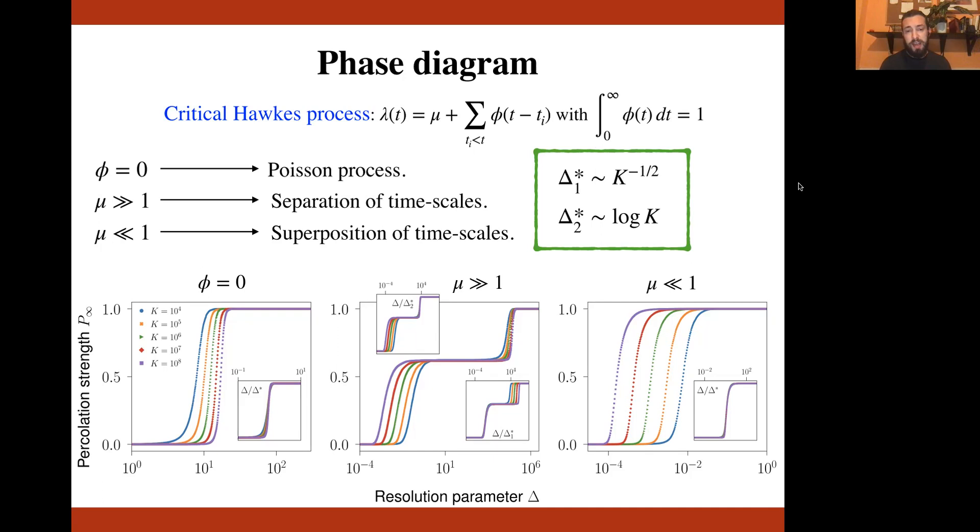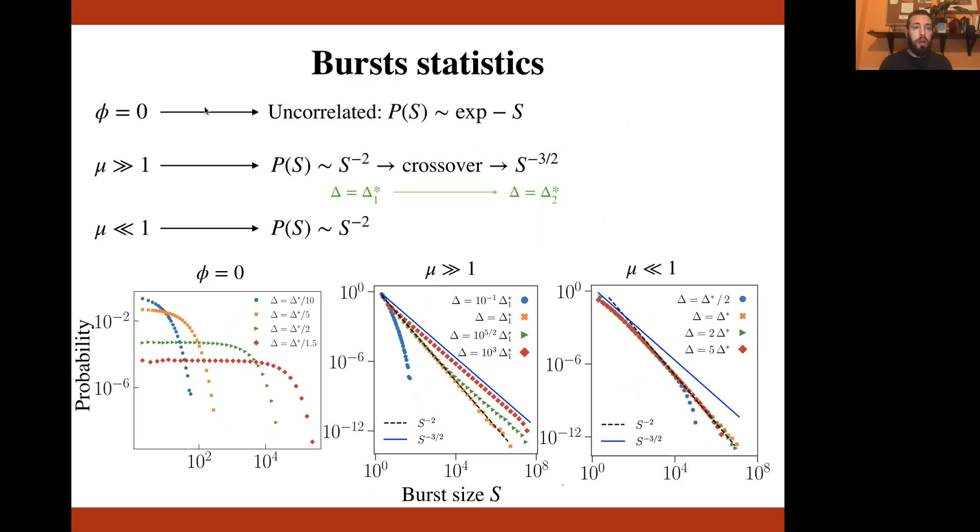At this point, we can fix a system size and study the burst statistics by varying the resolution. Again, in the case of the Poisson process, the process is fully uncorrelated. And as one expects, we find that the probability distribution of the burst size is exponential with a typical scale that grows as one approaches the transition point, exactly as in a standard one dimensional percolation model.